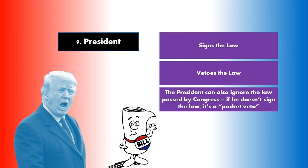It takes a very high number for the veto to be overridden by Congress. The third option for the president is what we call a pocket veto — basically, the president ignores the law. He doesn't sign it and he doesn't reject it. If Congress is out of session — they're back home in their constituencies and not currently meeting — the president ignores the law for 10 days and it's vetoed. He just lets the bill die.